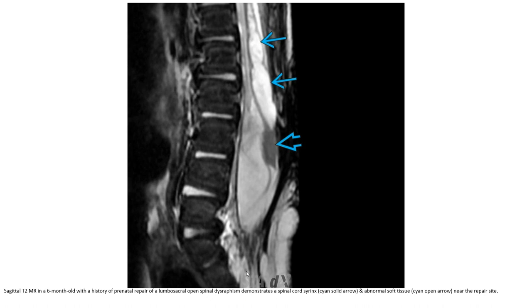This is a T2 image in a 6-month-old with a history of prenatal repair of a lumbar sacral open spinal dysraphism, demonstrating spinal cord tethering and abnormal soft tissue near the lumbar sacral myelomeningocele repair site.